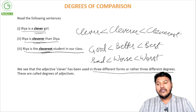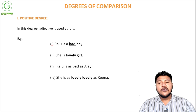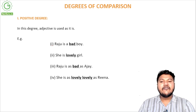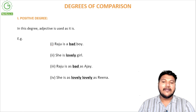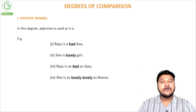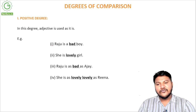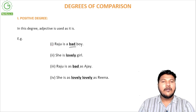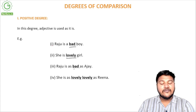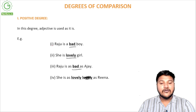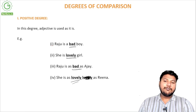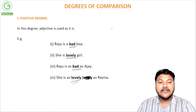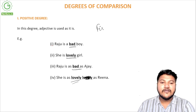There are three degrees. The first is positive degree, in which an adjective is used as it is — no changes are made. It is the base form. For example: 'Raju is a bad boy,' 'she is a lovely girl,' 'Raju is as bad as Ajay,' 'she is as lovely as Reena.' These are all positive degrees — simple adjectives stated in their first form.